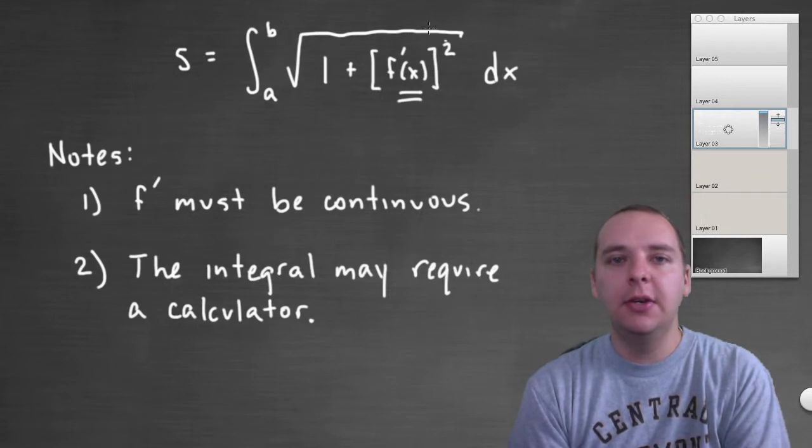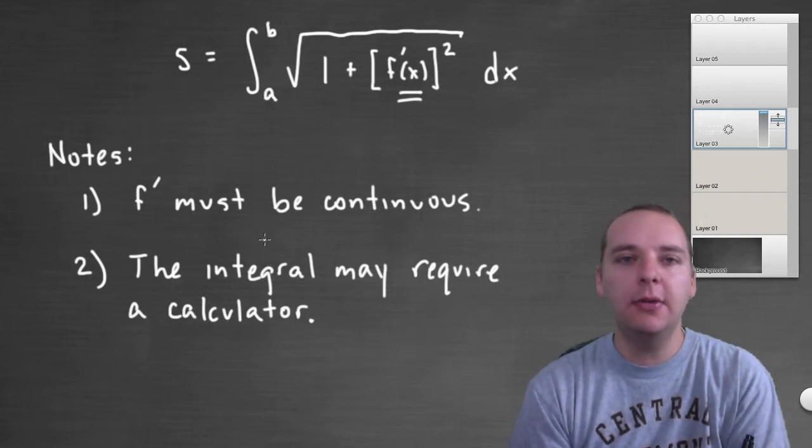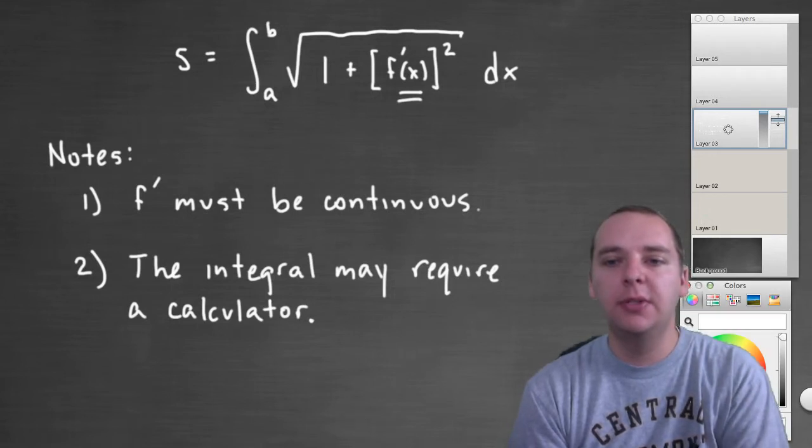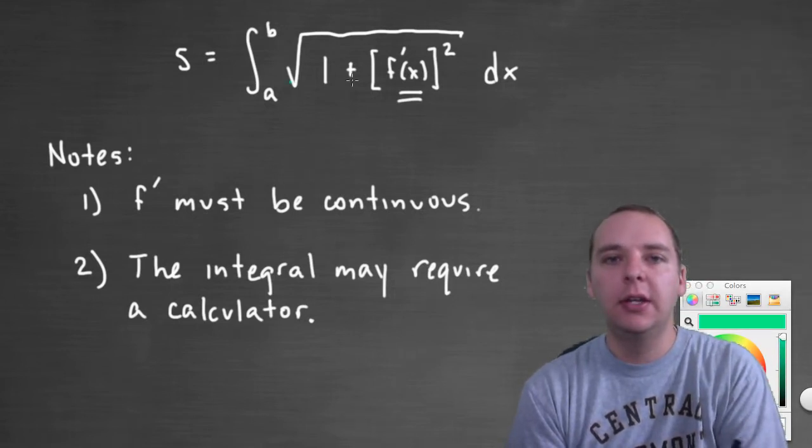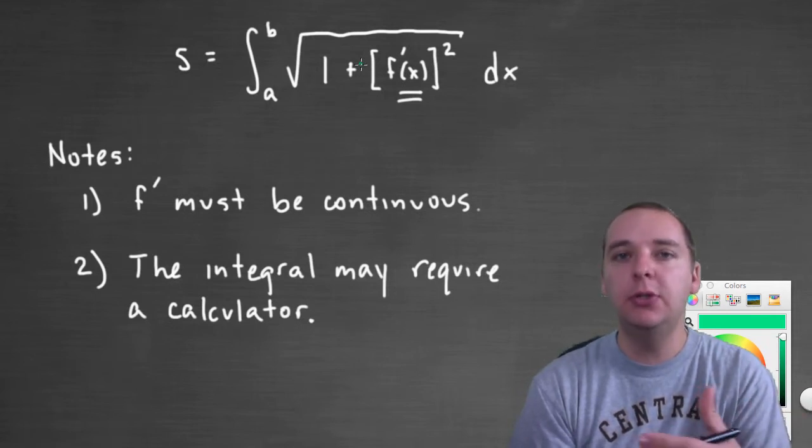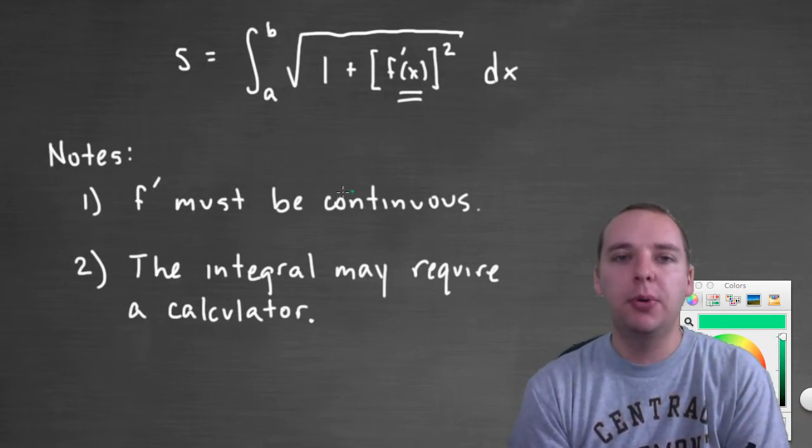Second thing, this integral right here is sometimes very difficult to do, because you'll notice it does have composition. There's layers here in this integrand, which kind of hints at we might need u substitution to do this integral, but there's a problem with that.